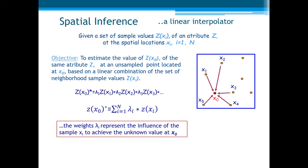Now, let us state the form of our linear estimator. Given a set of sample values, z(xi), of an attribute z, at the spatial location xi, those ones here, i equal 1 to n. The objective is to estimate the value z(x0), of the same attribute z, but at an unsampled point located at x0, based on a linear combination of the set of neighborhood sample values z(xi). So, we can take this form of a weighted average with the weights of those lambdas here. Note that the weight λα represents the influence of the sample xα to achieve the unknown value x0.